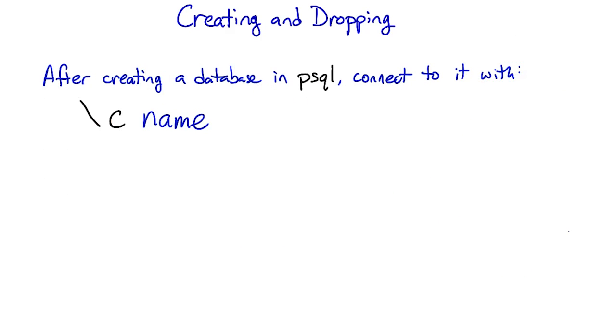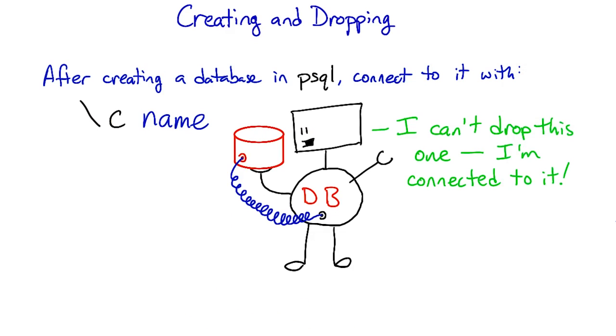Once you've created a database in PSQL, you'll want to connect to it. You can do that using the backslash C command followed by the database's name. By the way, you can't drop a database that you're connected to.